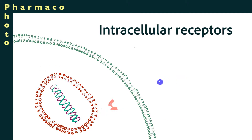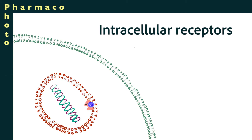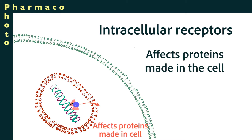When intracellular receptors bind to the ligand, the entire receptor-ligand complex goes into the nucleus of the cell, binds to the DNA, and affects the transcription and translation of certain portions of the DNA.